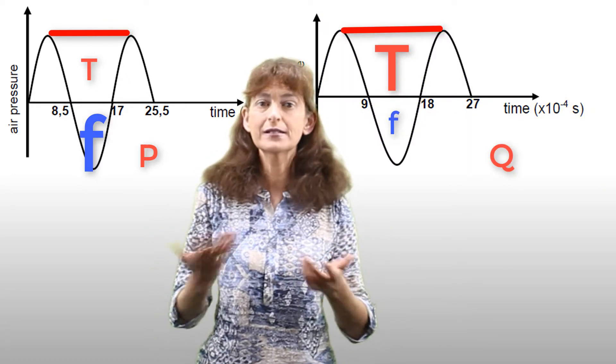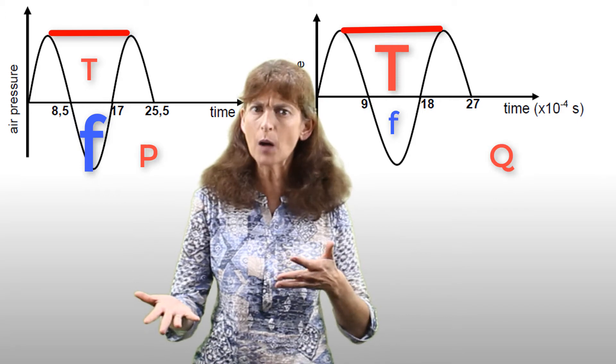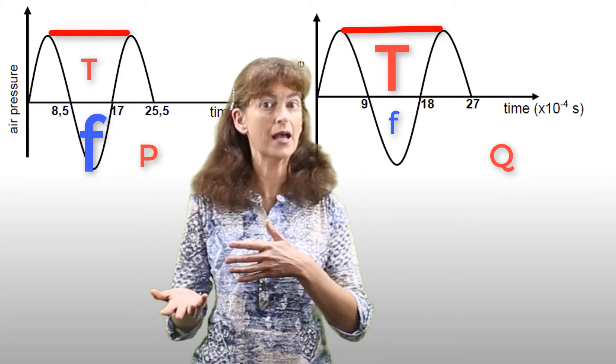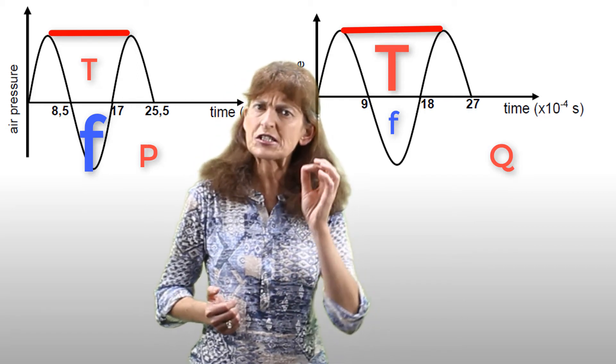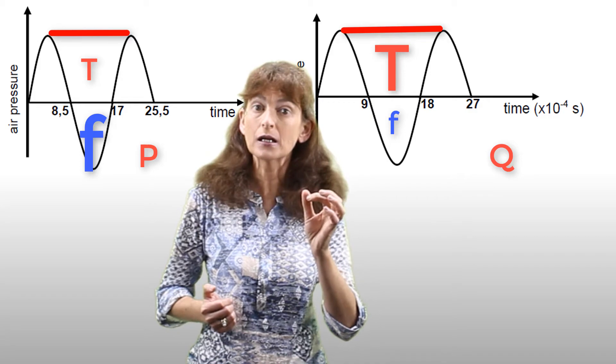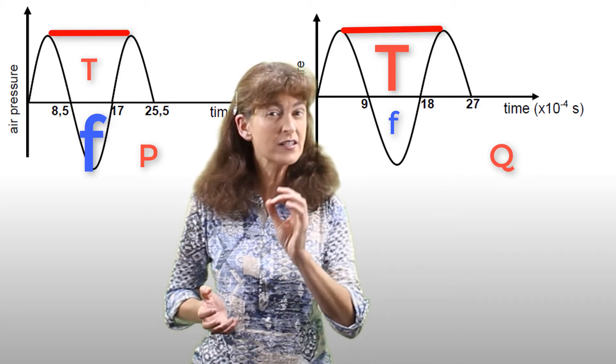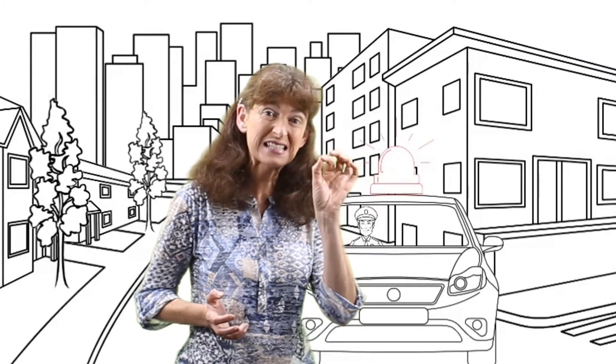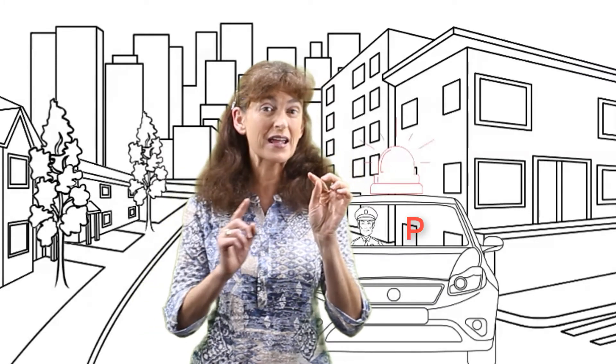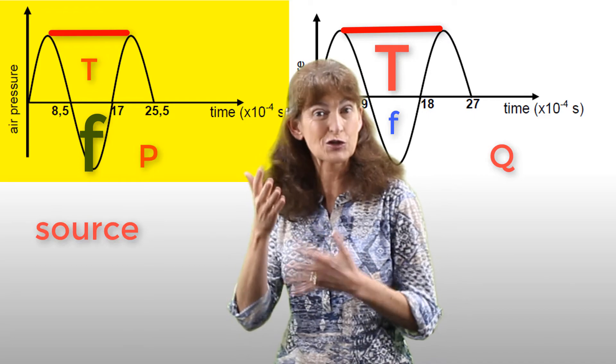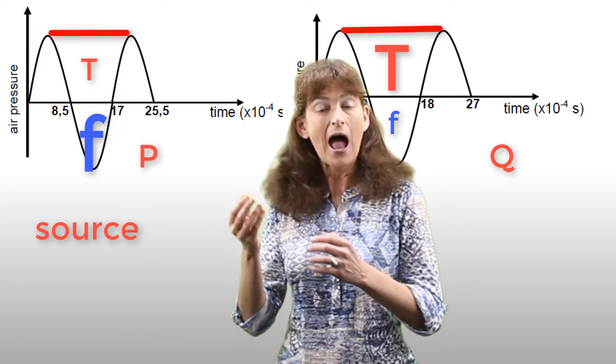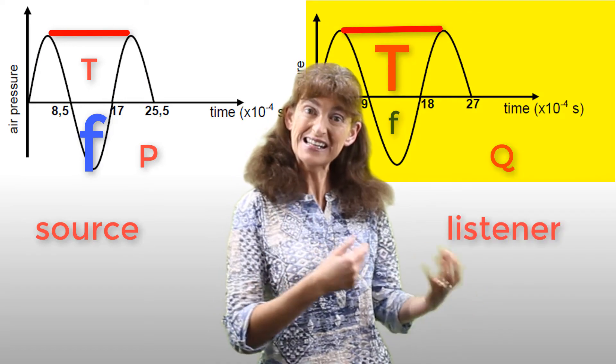But why do they have different sounds? Because they are the same sound made by the siren of the police car. So what is going on here? Something is changing the frequency and period of the sound from where it was emitted at P to where it was detected by the listener at Q. We can call P the source because it's right there at the source which made the sound, and we can call Q the listener.